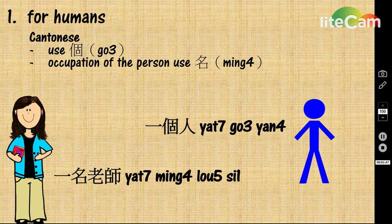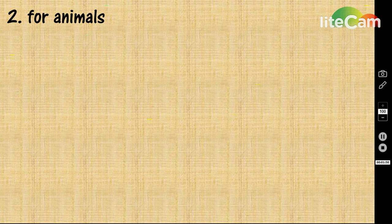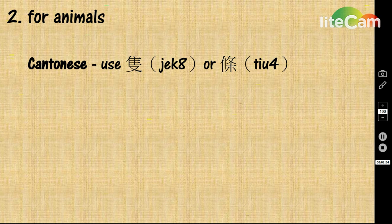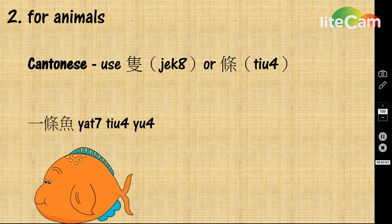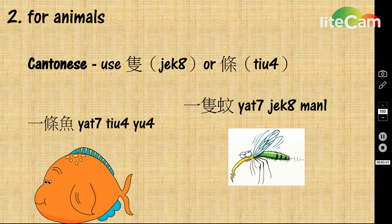十 means 10. For the animals, we will use the word 隻 or 條 to add the quantifiers. For example, a fish — we will say 一條魚. 一隻魄 means a mosquito.